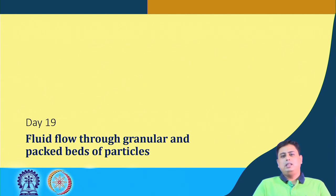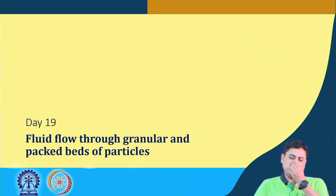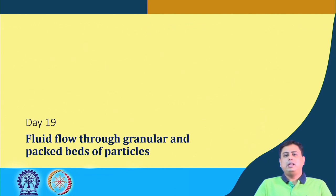We have seen that when the flow is laminar, what is the relation between the pressure drop versus the superficial velocity or the flow rate. In the case of turbulent flows, what would be the nature of this relationship between delta P or the pressure gradient across the bed versus the superficial velocity or the flow rate.